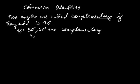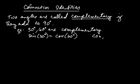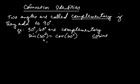Notice that sine of 30 degrees equals cosine of 60 degrees. The word cosine contains the prefix co-, indicating that cosine and sine are cofunctions. What's important is that a trig function of an angle is always equal to its cofunction of the complement.